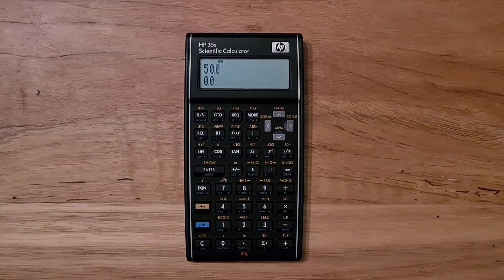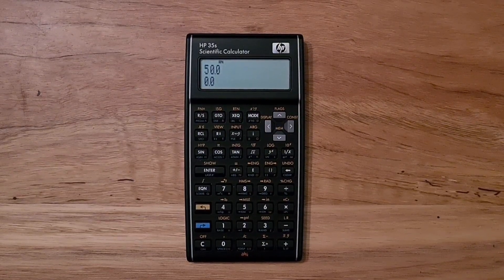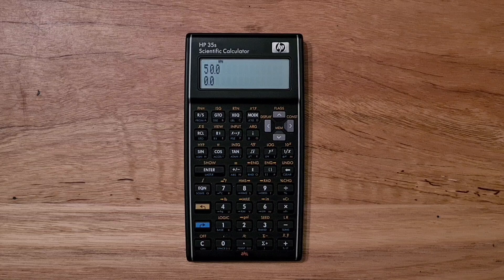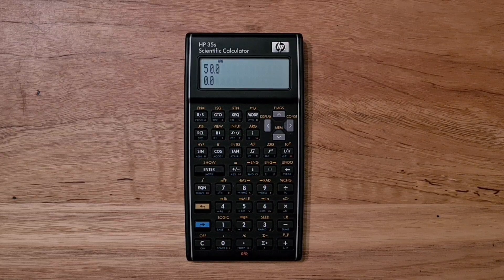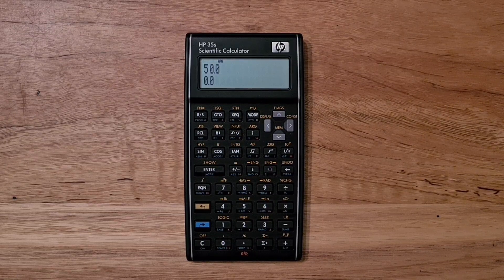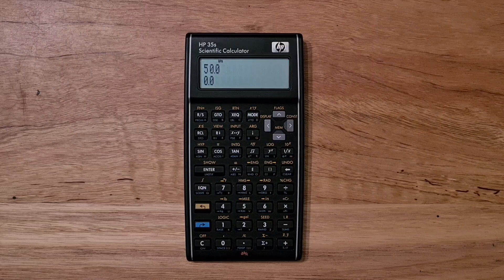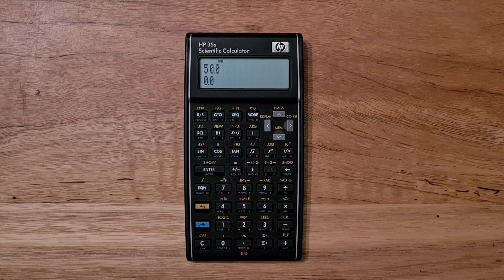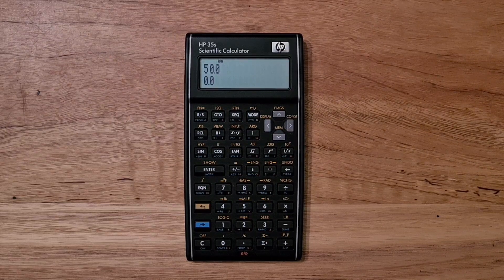Physically, the HP-35S clearly pays design homage to the original HP-35. It has a metal front plate and a two-line alphanumeric LCD display. Overall, it's quite an attractive and solidly built calculator.